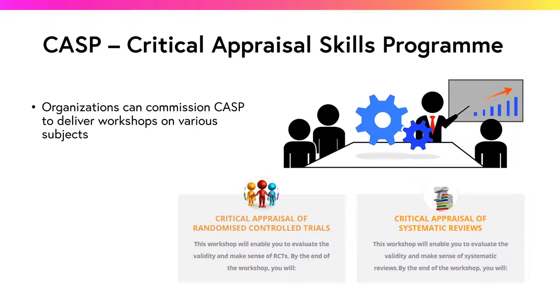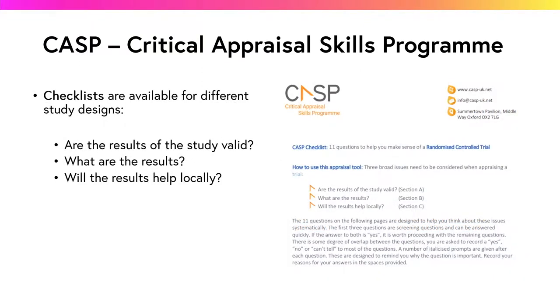Organisations can commission CASP to deliver workshops on various subjects, including the critical appraisal of randomised controlled trials and systematic reviews. The online resources available are checklists that can be used when critically appraising a paper, with different checklists available for different study designs.